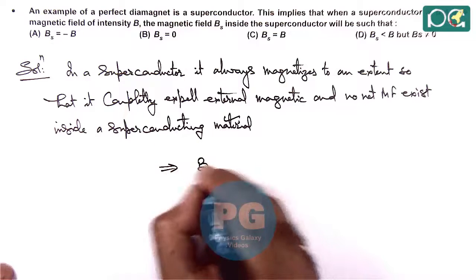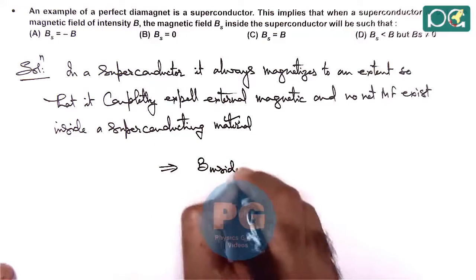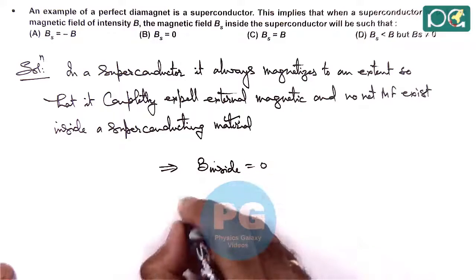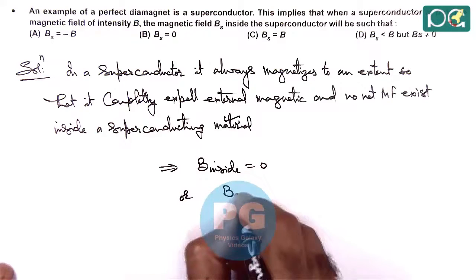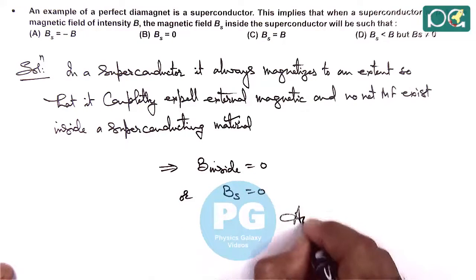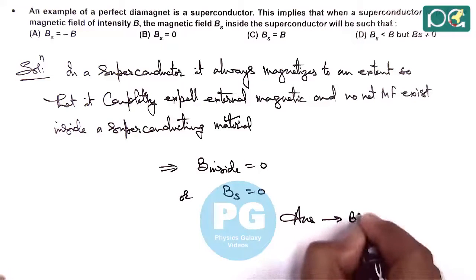This implies B inside a superconductor is always zero, or here we can write Bs equals zero. So answer to this question here is option B.